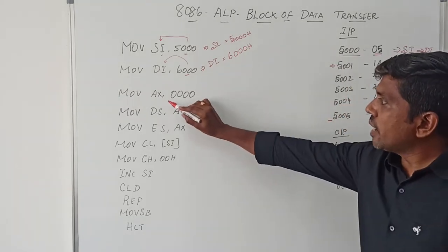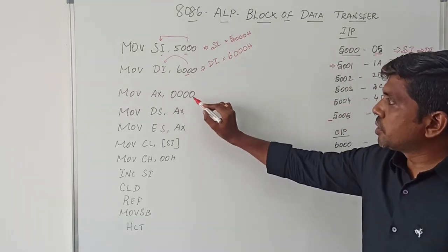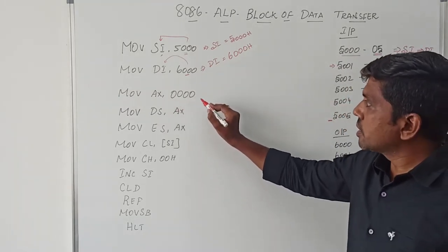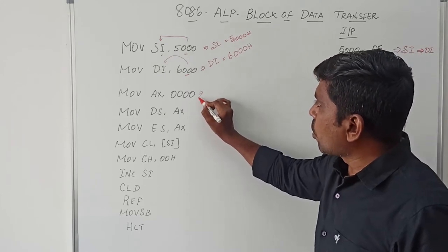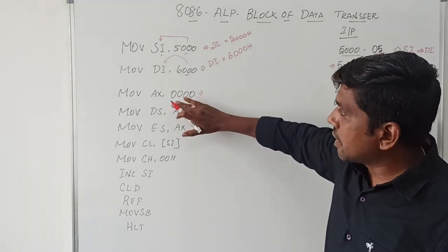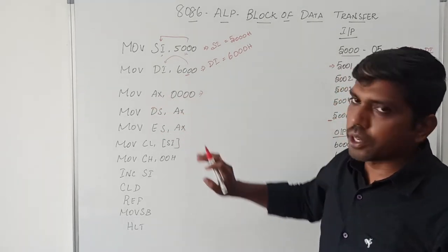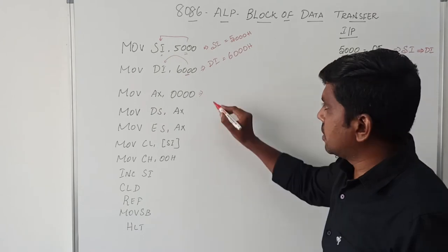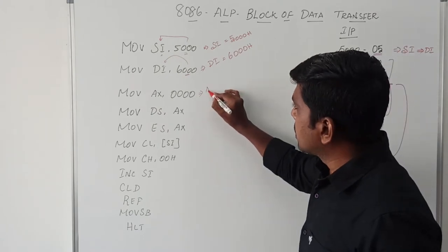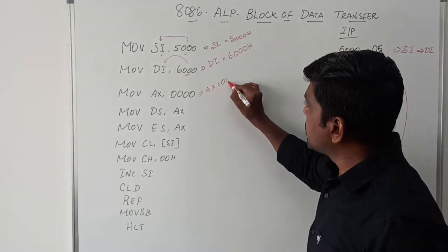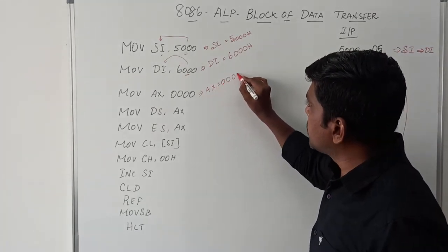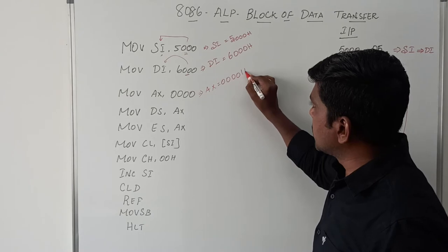Then MOV AX, 0000H — this is an immediate value. After execution of this instruction, the accumulator content is cleared. Now AX holds the value 0000H. These instructions are used to initialize the segment address.